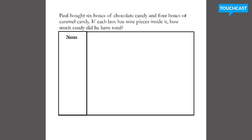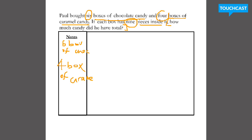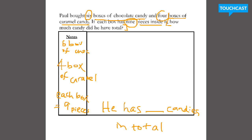All right, this is my very last problem. Paul bought six boxes of chocolate candy and four boxes of caramel candy. If each box has nine pieces inside it, how much candy does he have in total? Let's quickly take those notes: he has six boxes of chocolate, he has four boxes of caramels, and each box equals nine pieces — so inside each box is nine pieces. The question is asking how much candy did he have in total? He has blank candies — so the label is candies in total. This helps me realize that I'm not solving for boxes, I'm solving for candies.